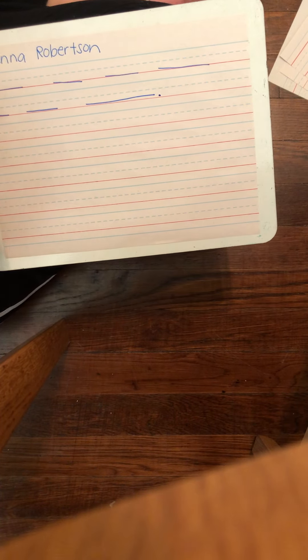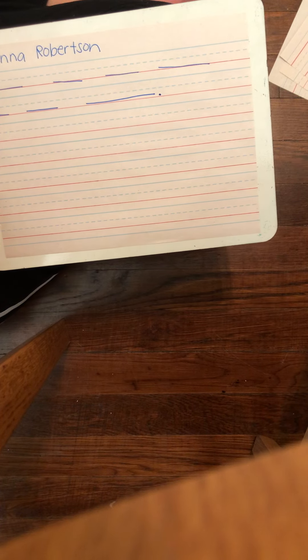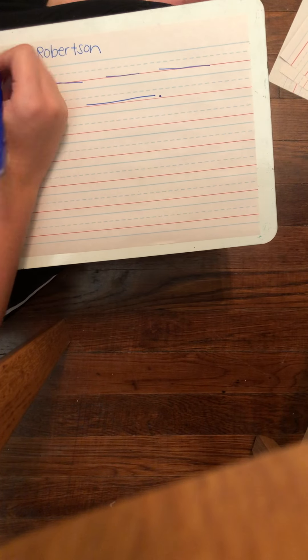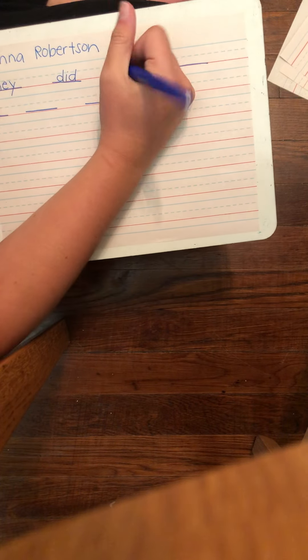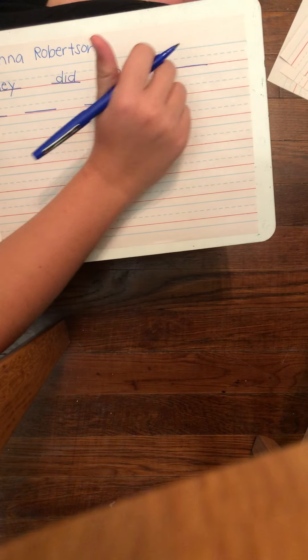And then I'm going to go back and sound my words out. Remember, it's okay if you spell words wrong as long as you are sounding them out. So, they, the, a, that's a sight word, I know how to spell that one. They did, d, id. They did not, they did not want.